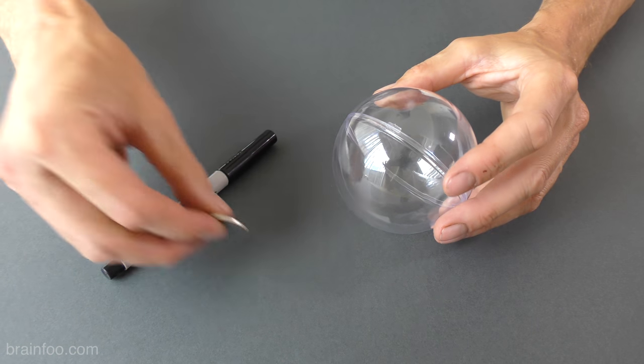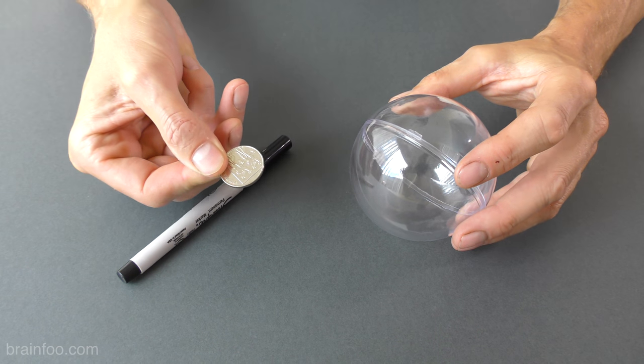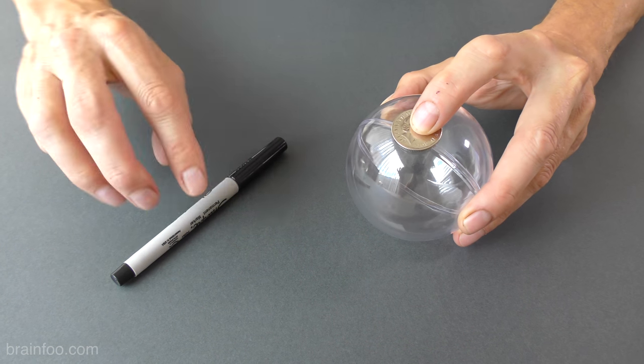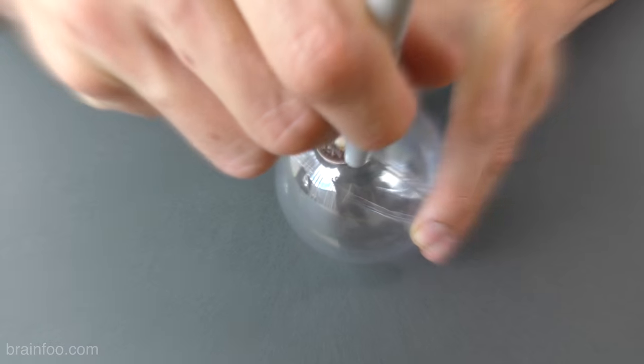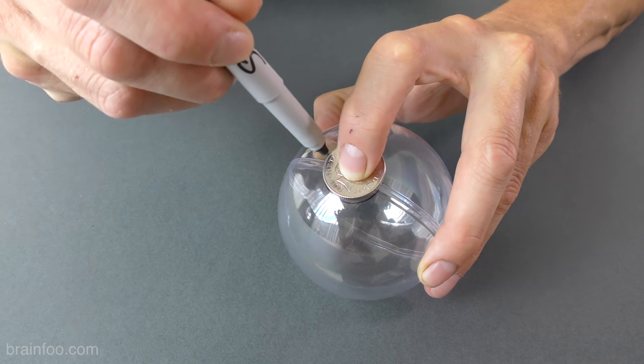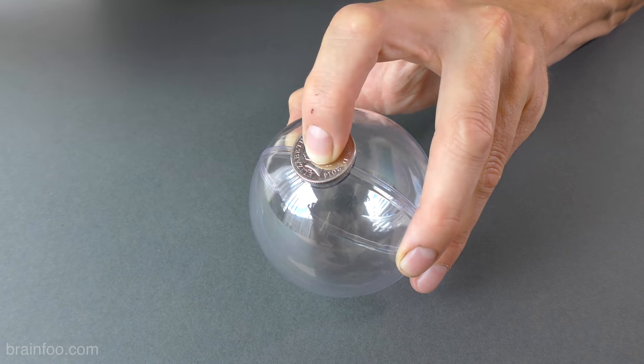Next it's time to mark the button detail. Just grab something round that's roughly the correct size. And for me that turned out to be a 10p piece coin. Now grab a permanent marker and carefully draw around the outside and we're good to go.